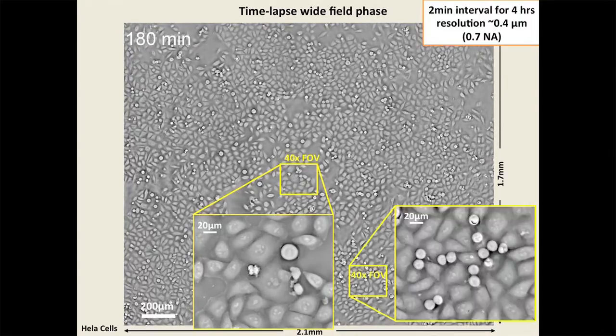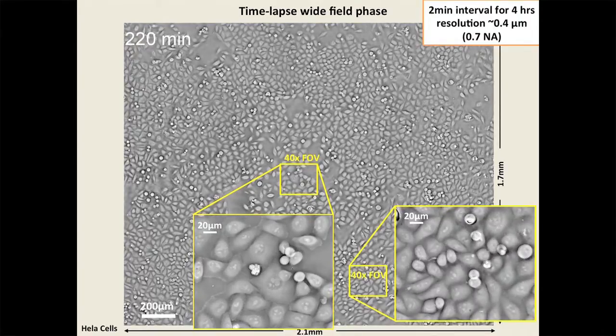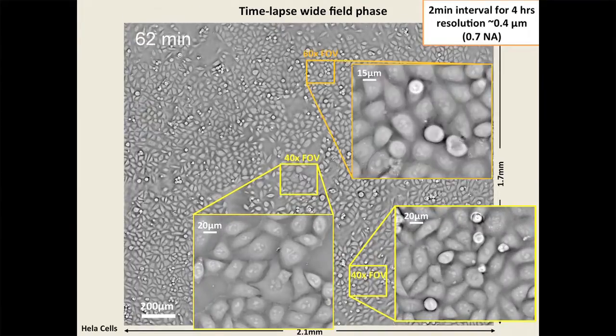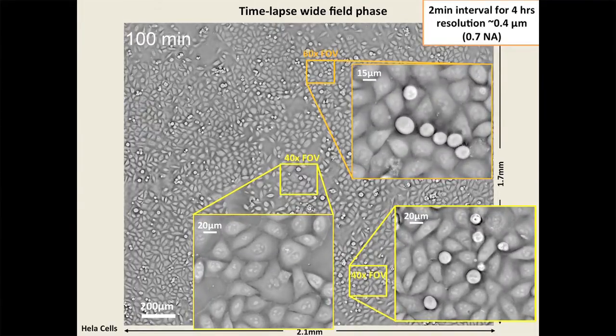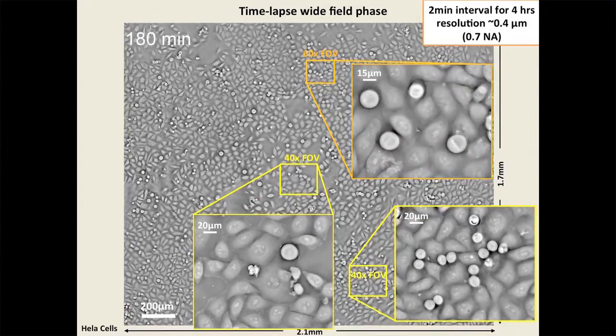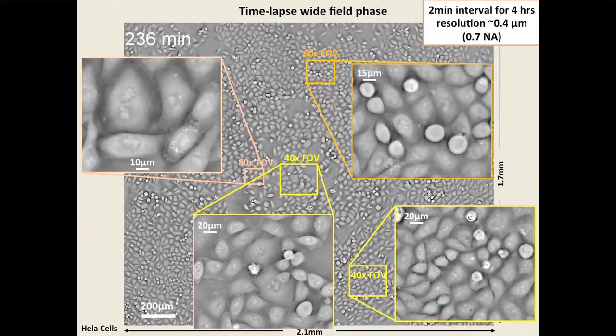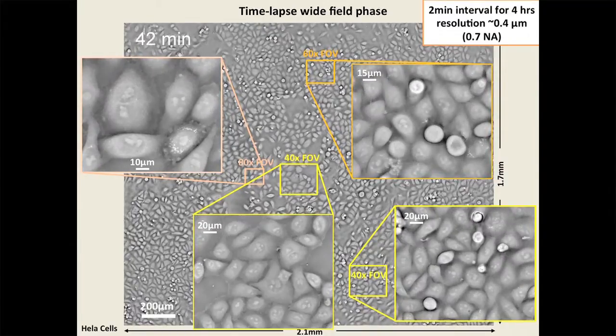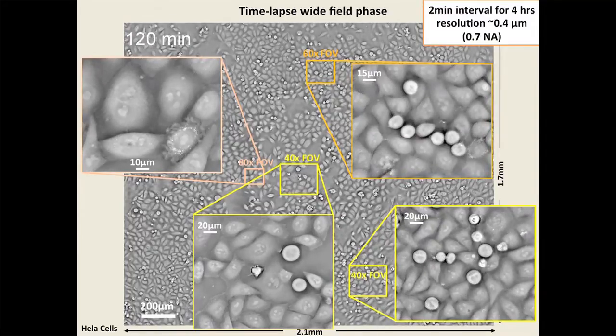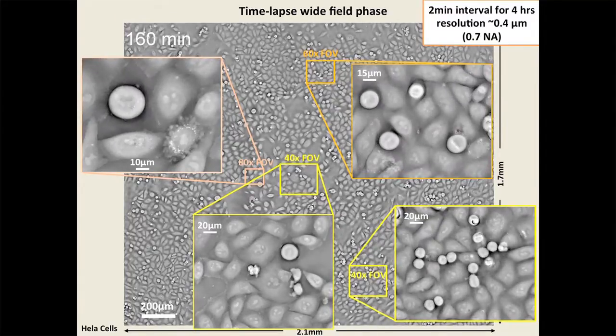So we get a large space-bandwidth product, which means we have these big images that if you zoom in have very good resolution—up to gigapixel size images—and they also have both amplitude and phase information. Recently we've worked on extending this to 3D so that we can have this large field of view, high resolution images across multiple depth planes to get 3D information about thick samples.